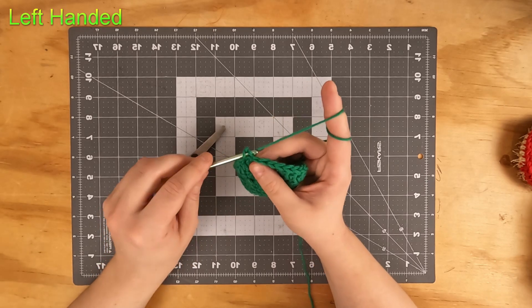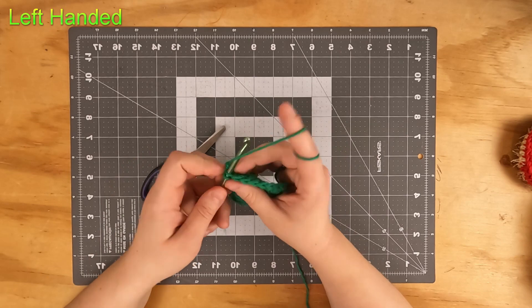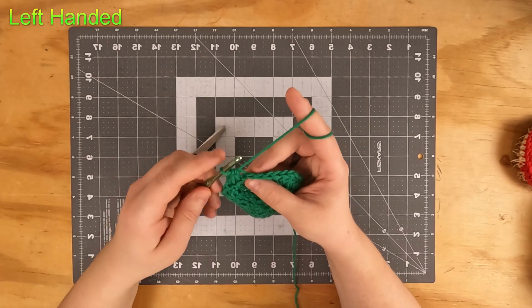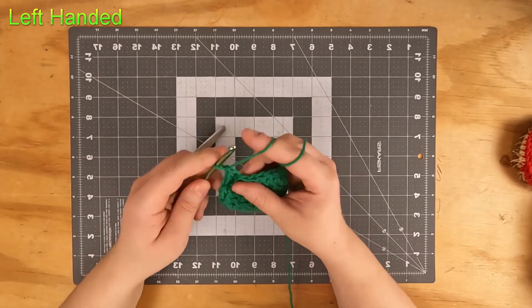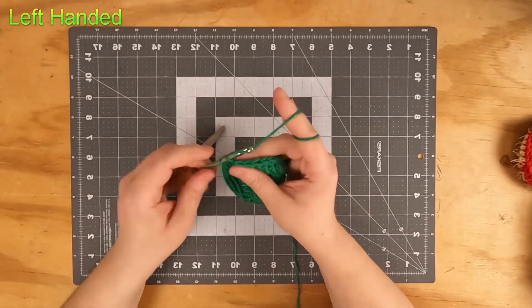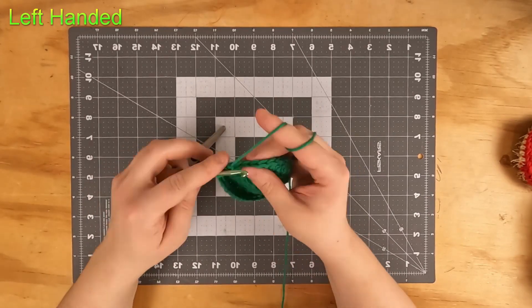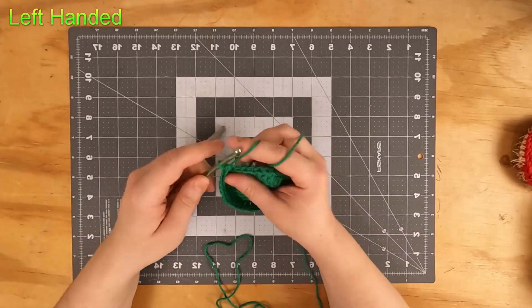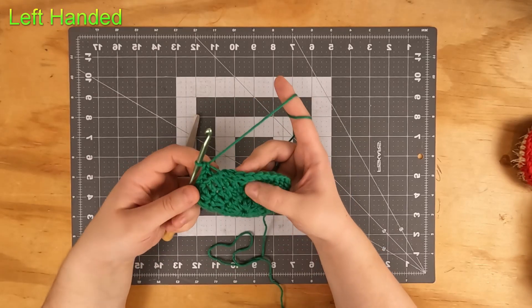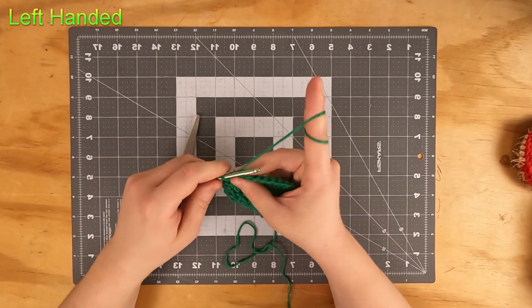So one single crochet for each and do that all the way around. Now we have 36 single crochets. Slip stitch into the first one.